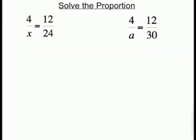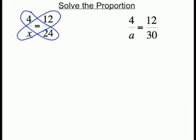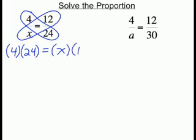For the first problem, we have 4 to x equals 12 to 24. To solve this proportion, we will cross multiply. So first we have 4 times 24 equals x times 12.